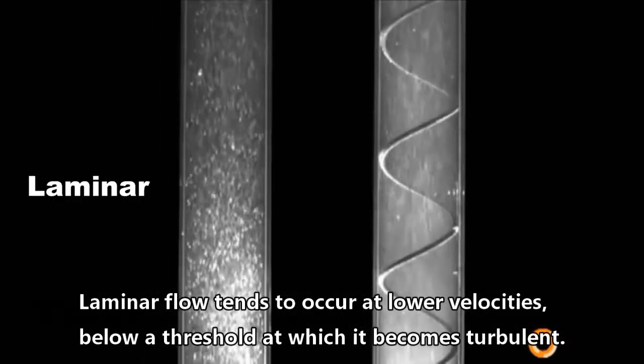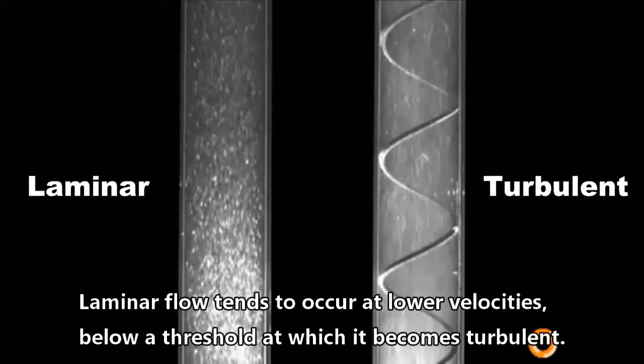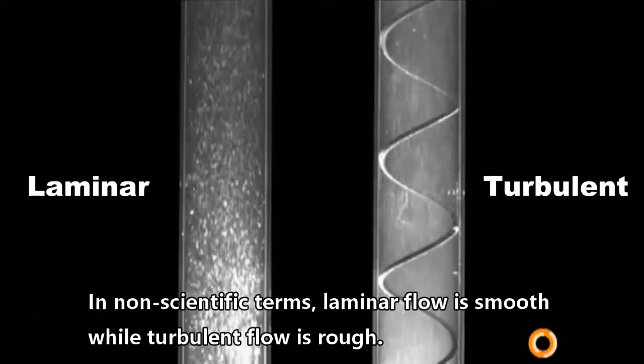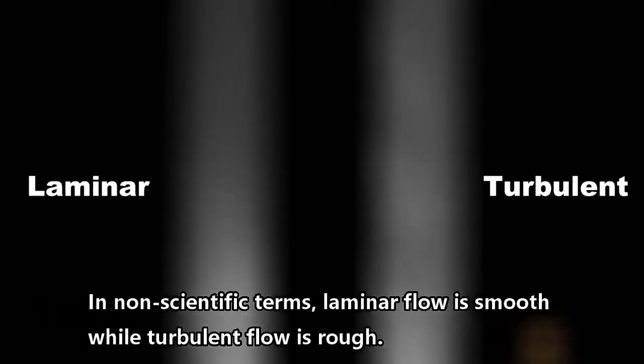Laminar flow tends to occur at lower velocities, below a threshold at which it becomes turbulent. In non-scientific terms, laminar flow is smooth, while turbulent flow is rough.